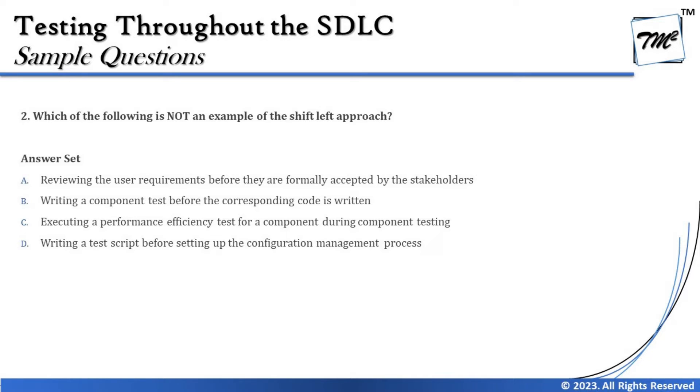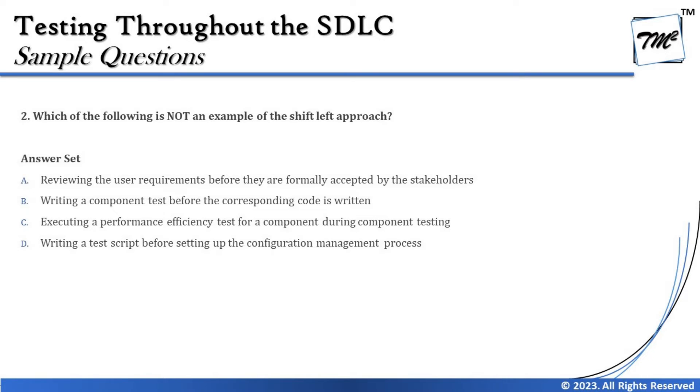Option A — reviewing user requirements before they are formally accepted by stakeholders — is a shift left approach: you are conducting static testing of requirements early. Option B — writing a component test before the corresponding code is written — is pre-poning, so it is shift left. Option C — executing a performance efficiency test during component testing — is shift left because performance testing is normally done after system testing, so doing it earlier is pre-poning.